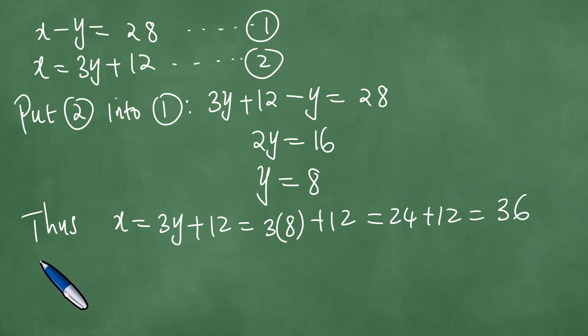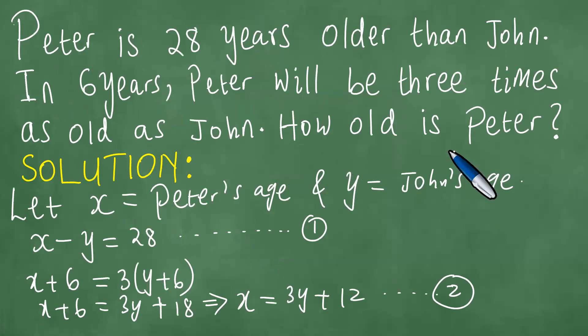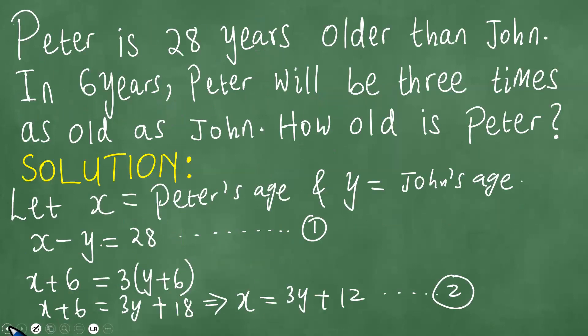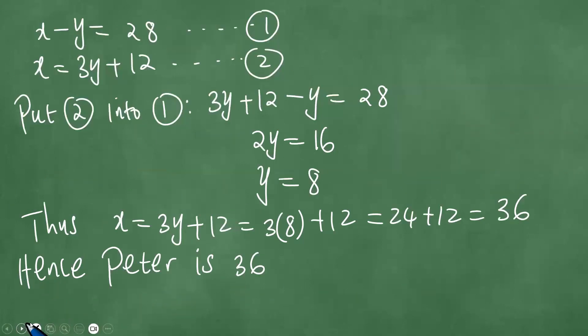Obviously, the question was how old is Peter? Hence, Peter is 36. Because we said in the beginning that x actually represents Peter's age, and we have already got the x value, which is 36. Hence, Peter is 36 years old.